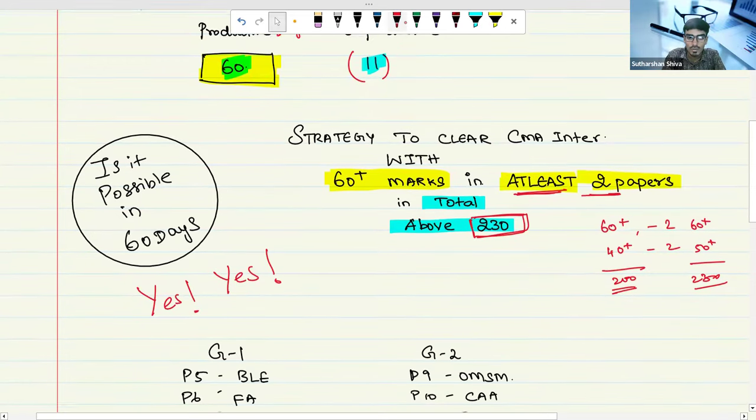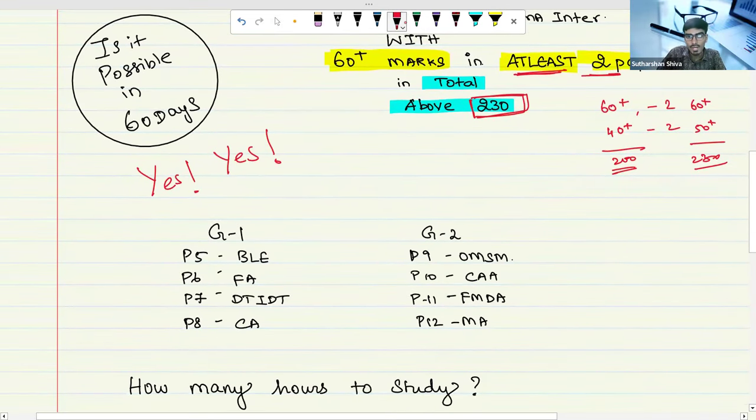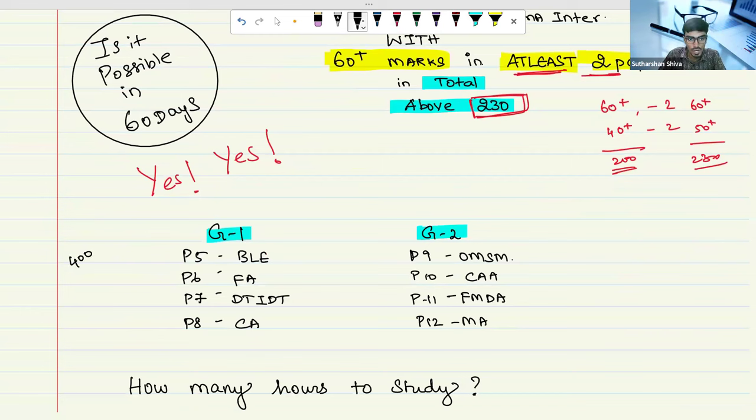For group one and group two, you are having four papers each. Paper five is law, paper six is financial accounting, paper seven is DT and IDT, paper eight is cost accounting. In group two, first paper is OM and SM, second paper is CA corporate accounting and auditing, paper 11 is FMTA, paper 12 is management accounting. Previously in old syllabus, paper 11 and 12 were combined into cost and management accounting.